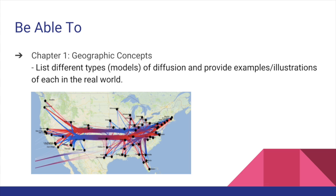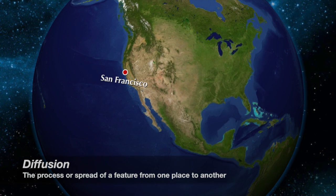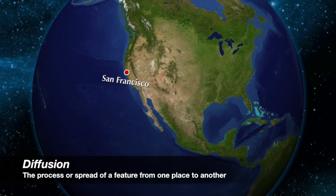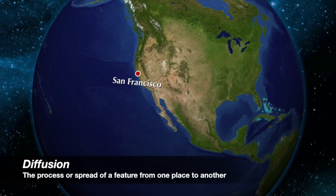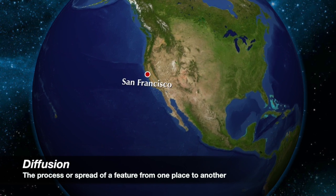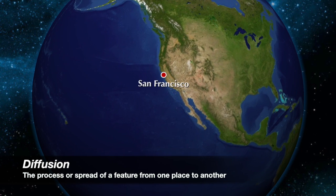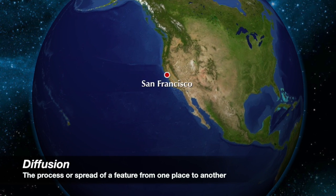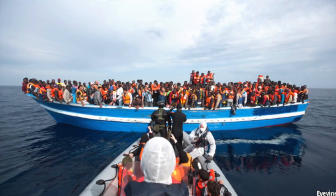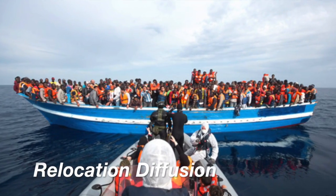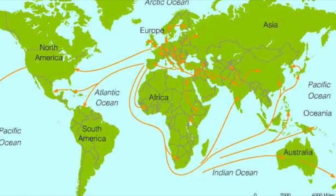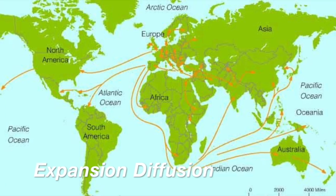In this video, I will be focusing on this Be Able To from Chapter 1, Geographic Concepts. Diffusion can be described as a process or spread of a feature from one place to another. Diffusion can be divided into two different types: Relocation Diffusion and Expansion Diffusion.